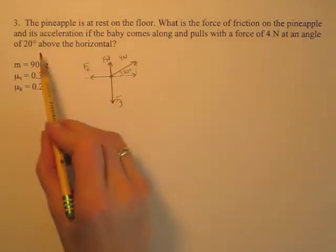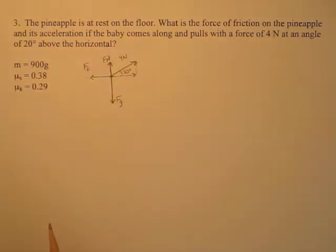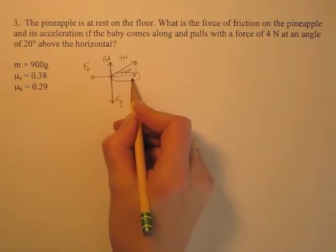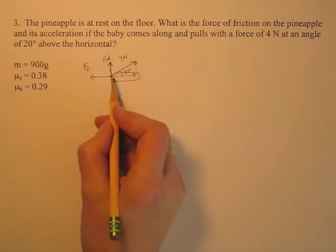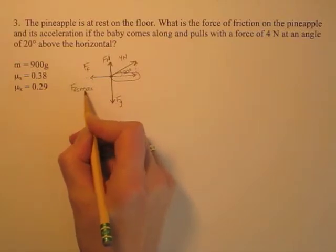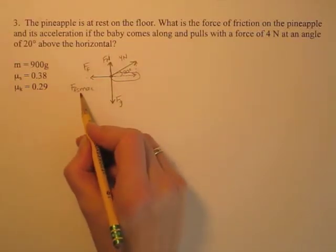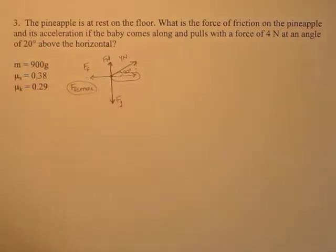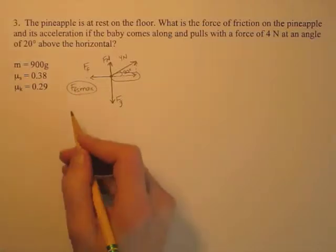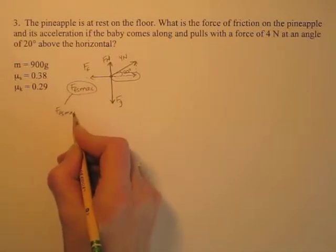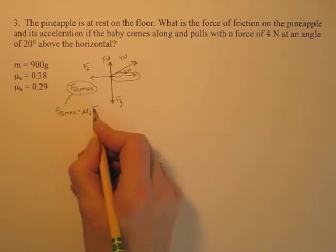What is the force of friction on the pineapple and its acceleration? I need to figure out if the pineapple is going to move or not. The pineapple will move if the horizontal component pulling to the right is bigger than the maximum force of static friction. So I need to find that horizontal component and compare it to the maximum force of static friction — I need to find both of those things. The maximum static friction equals mu static times the normal force.